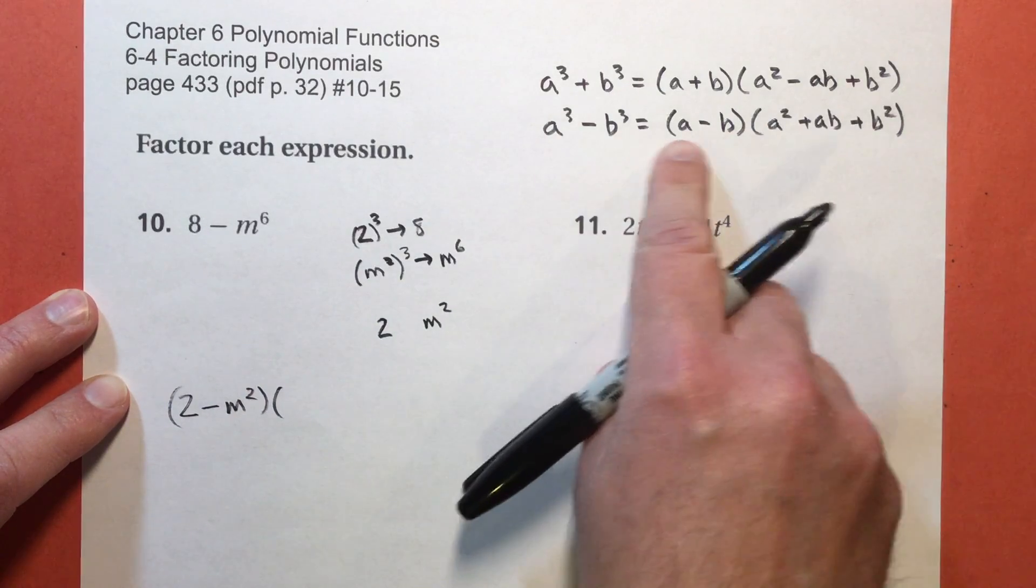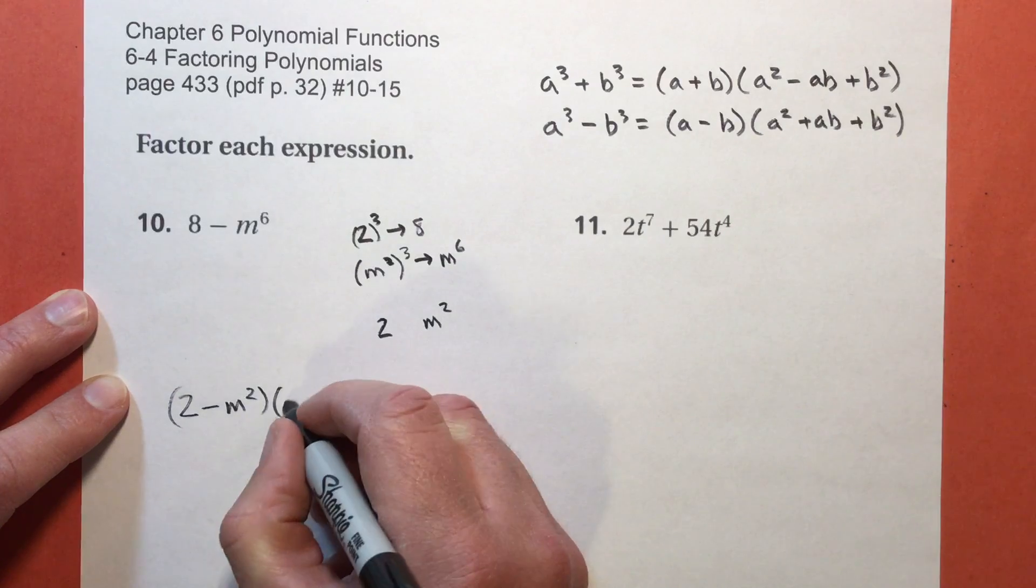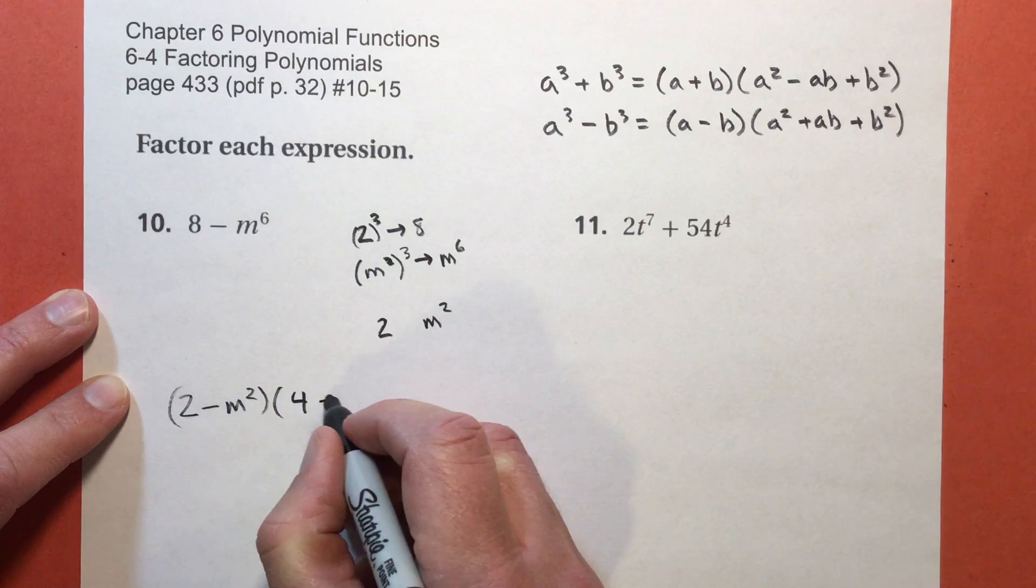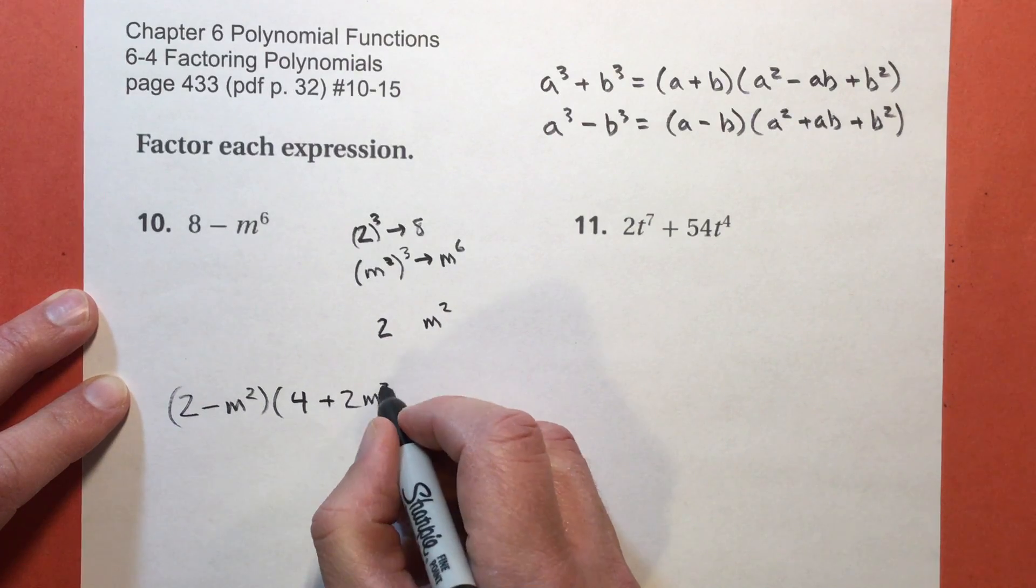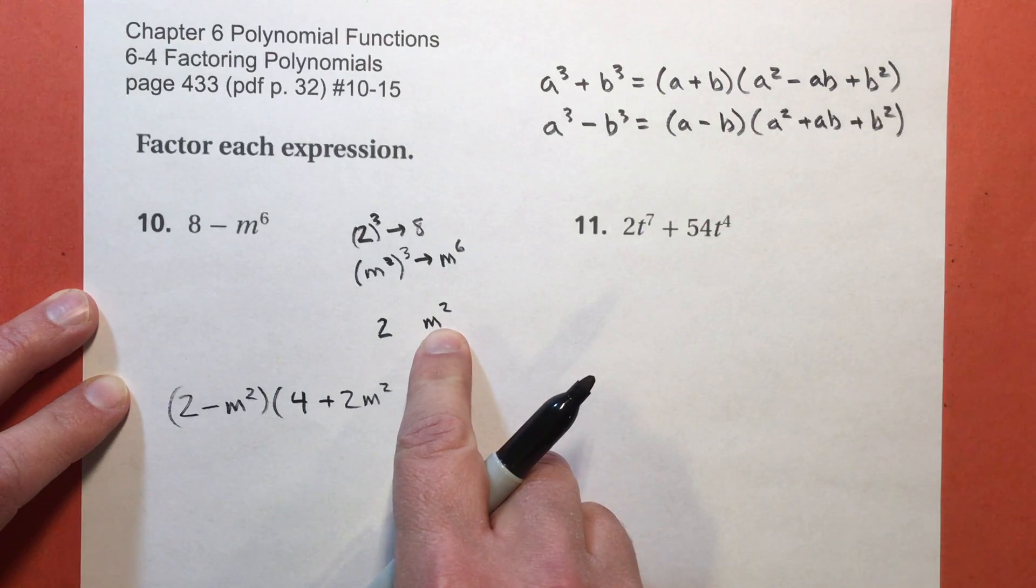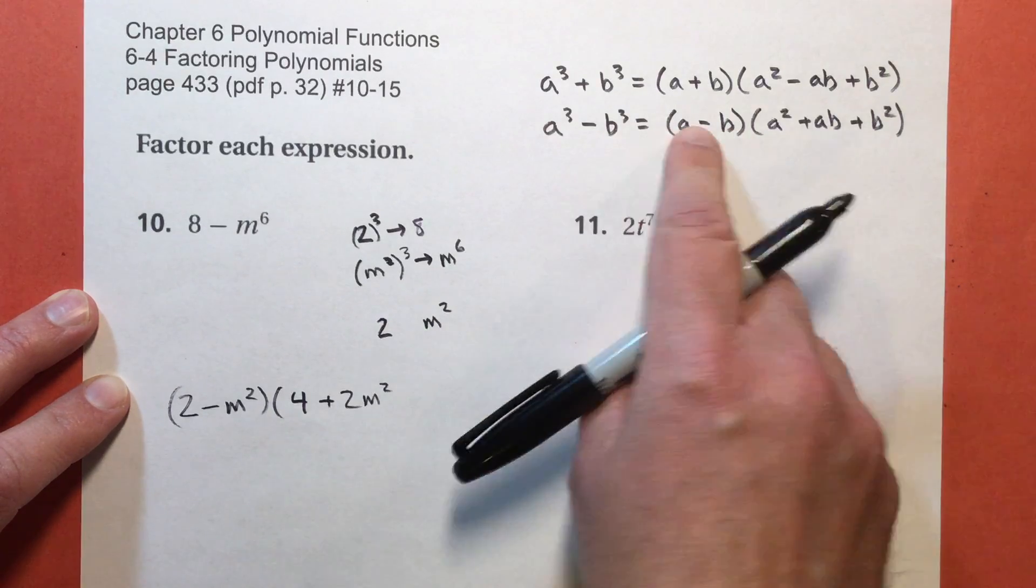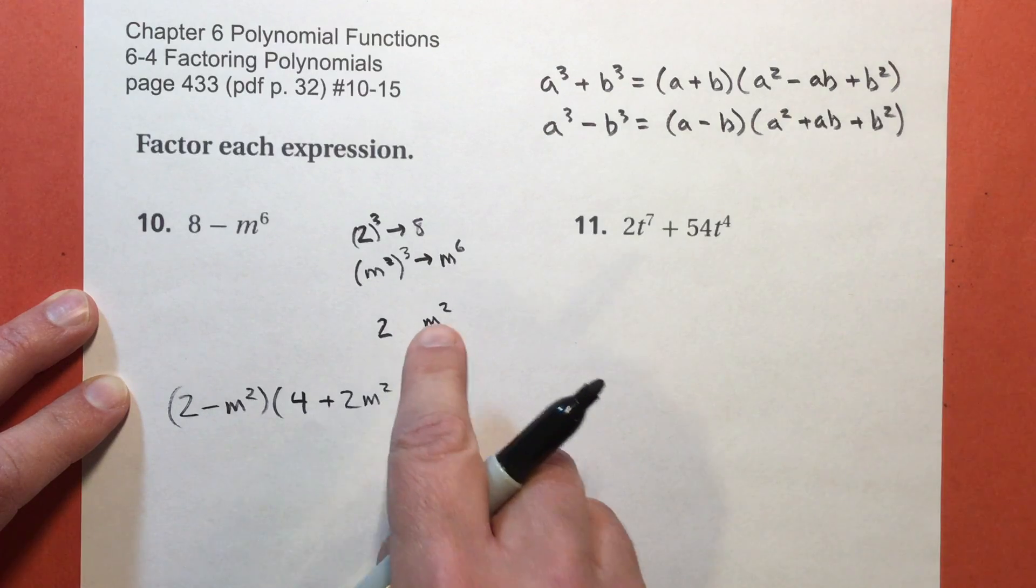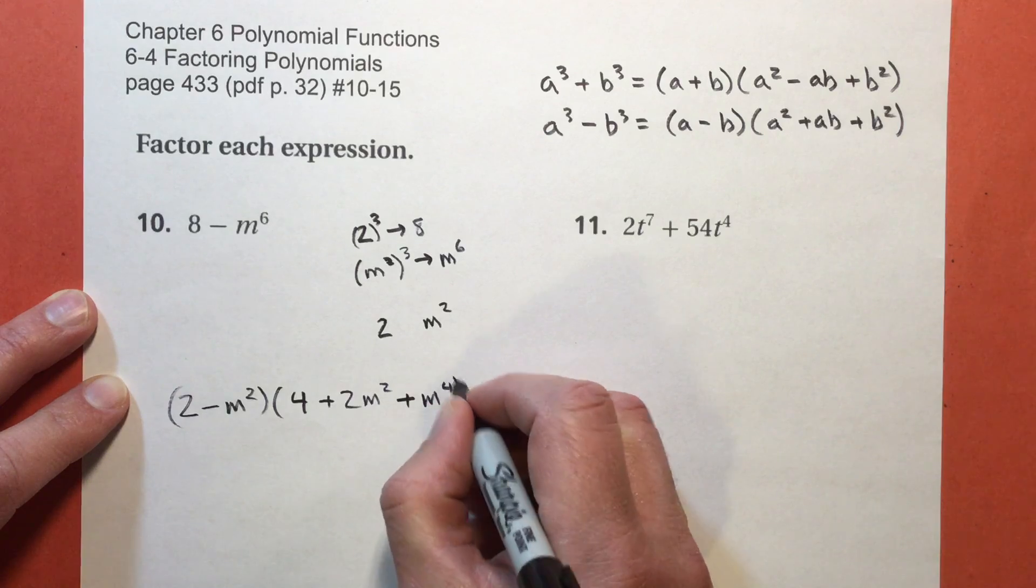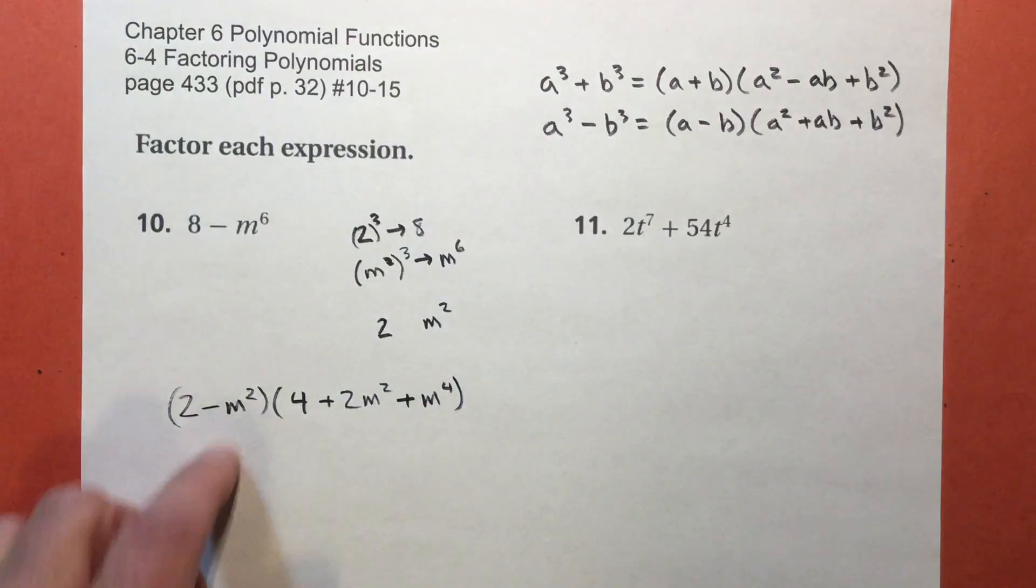2 subtract m to the second power. Then I take that first part, and I square it. 2 squared is 4. I add these two things multiplied by each other. 2 times m squared. And then I take the second thing, in this case represented by the b. That's why we use a and b, so we stop saying the thing. m to the second power, and I'm going to square it. That's going to be m to the fourth power. That's it.